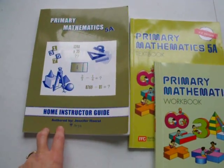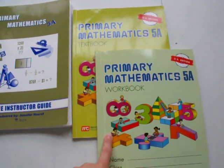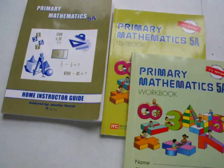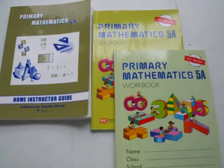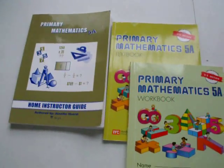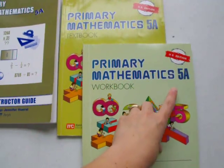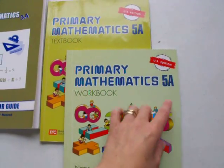The Home Instructor's Guide is around $17. The textbook and workbook are around $13. Singapore is a mastery approach. You would need, for a whole school year of math, an A and a B.